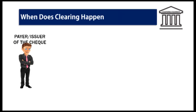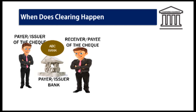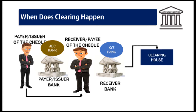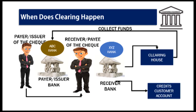The issuer of a check gives the check to someone who in turn deposits it in their bank. The banker of the recipient party receives this check at the clearing house, collects the money from the issuer's bank, and deposits it in the recipient's account. For example: you have issued a check to Mr. A who has an account in XYZ bank. Mr. A will deposit the check in his bank. XYZ bank will then approach the clearing house, collect the money from your bank, and deposit it in Mr. A's account. It's that simple.